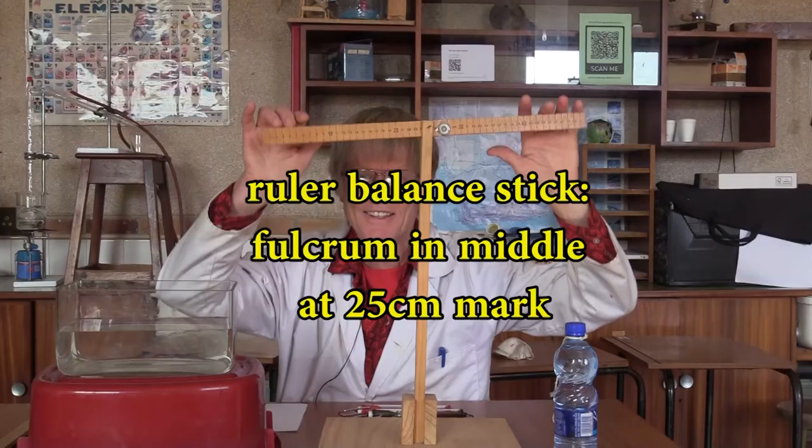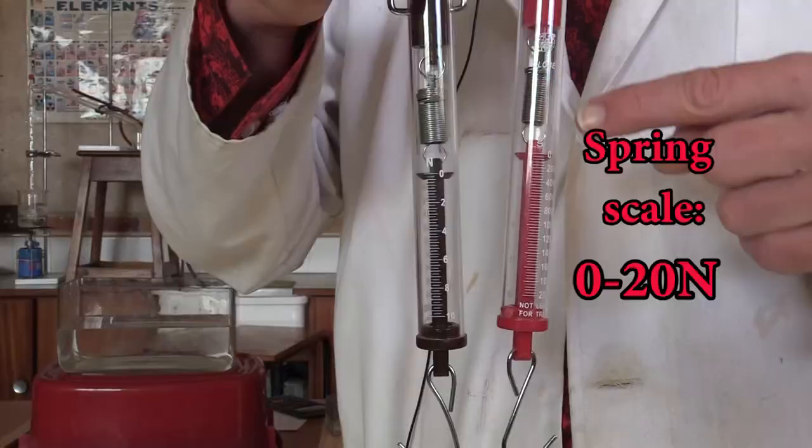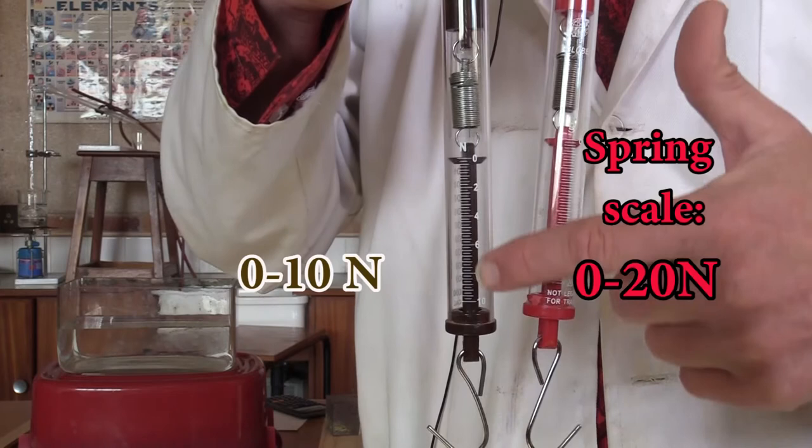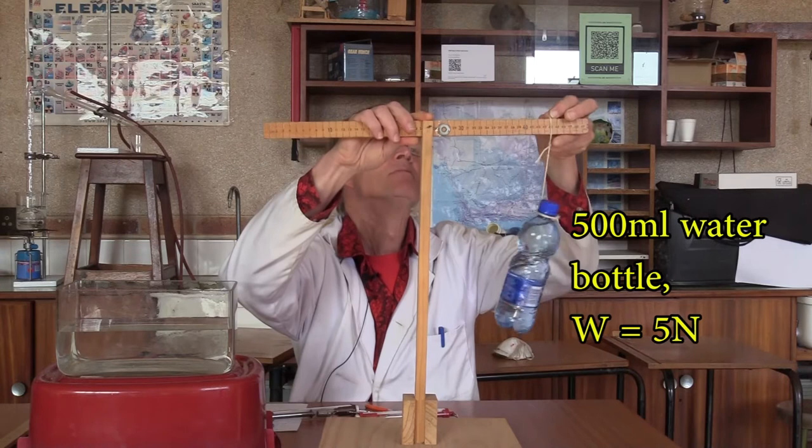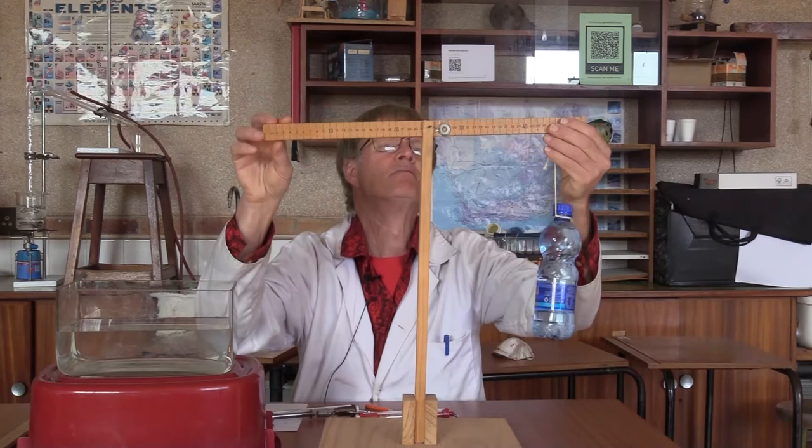So we have the ruler balanced in the middle at the 25 centimeter mark. And we have two scales, a 0 to 20 newtons and 0 to 10 newtons. We take a 500 milliliter bottle with water in it. The density of water is 1 gram per milliliter. And so it has a mass of 500 grams.